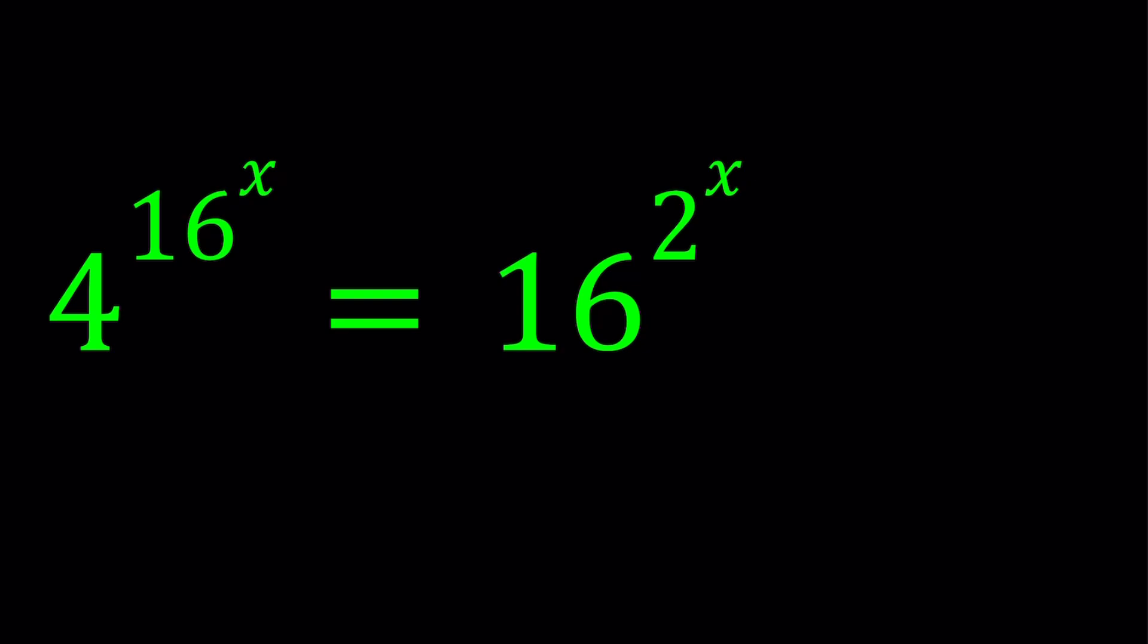So we have 4^(16^x) = 16^(2^x). I could change the bases, like I could make 4 and 5, or 2 and 3, but that would make the problem a little harder and we would probably have to use logarithms. We're probably going to use it again, but at least the bases are relatable, which means they can be written as powers of the same number.